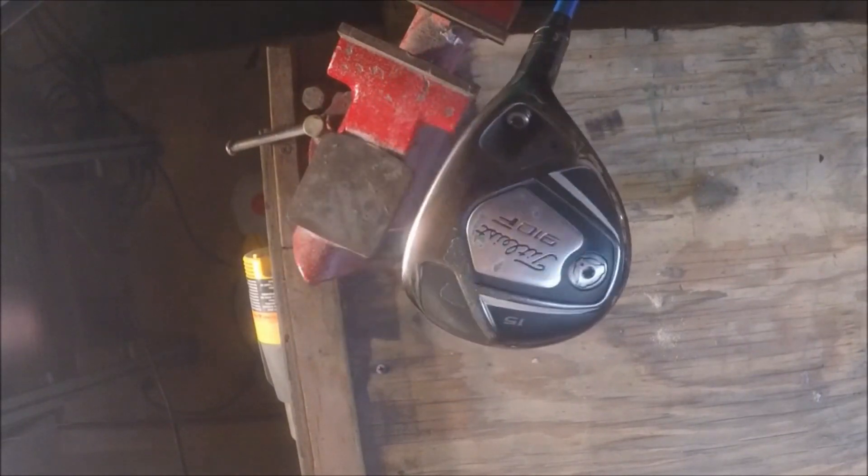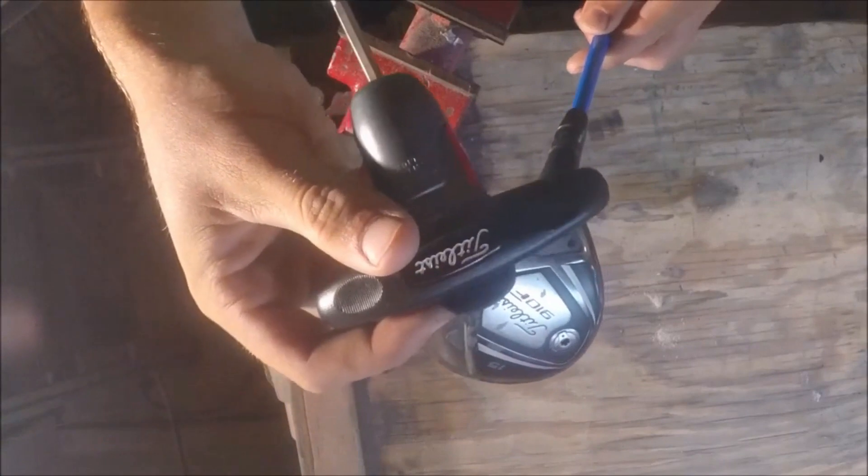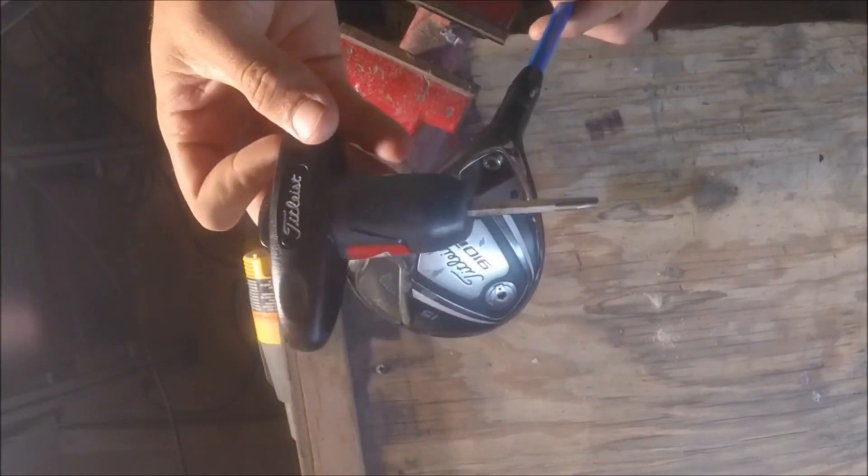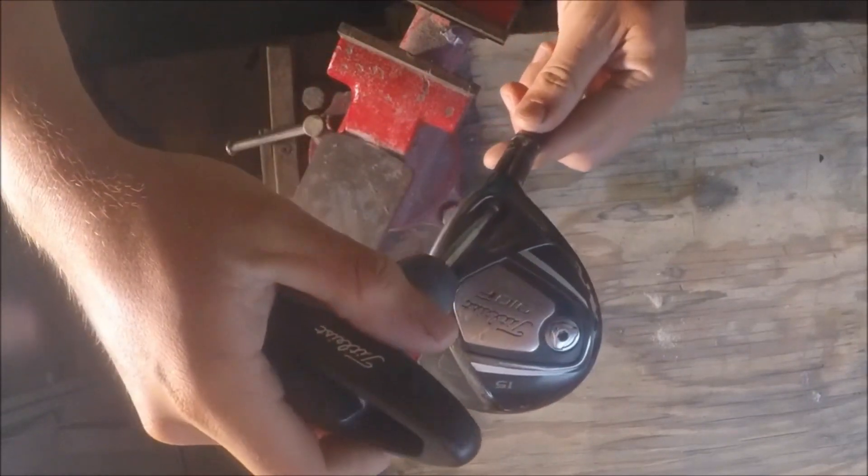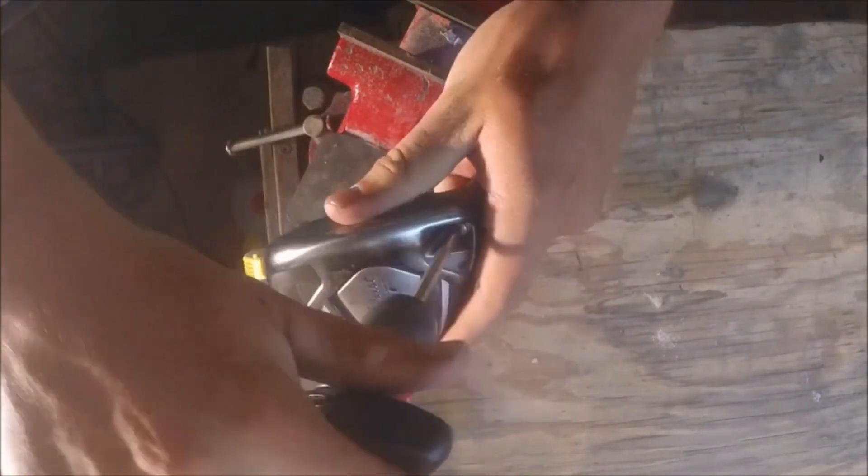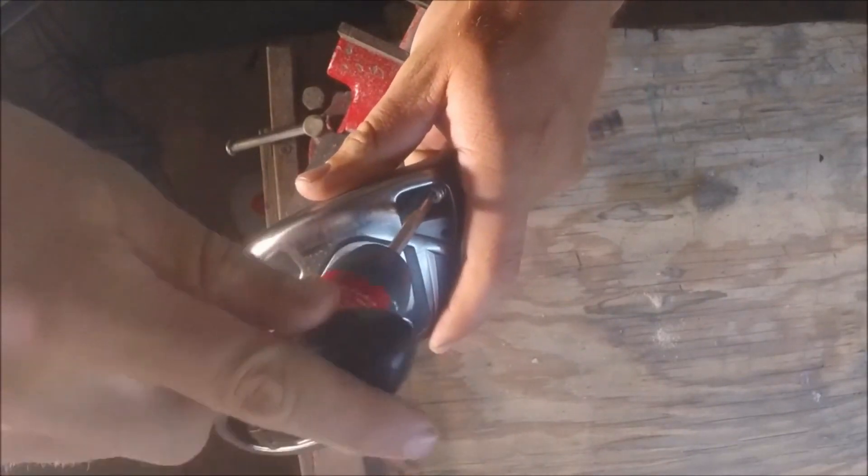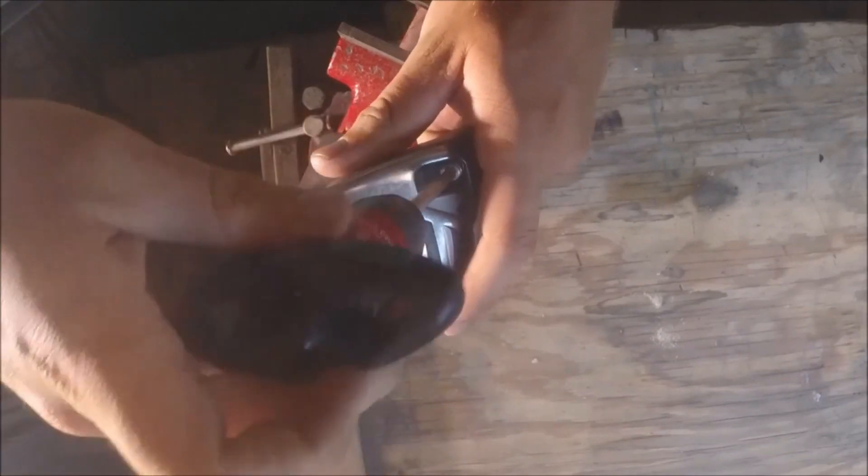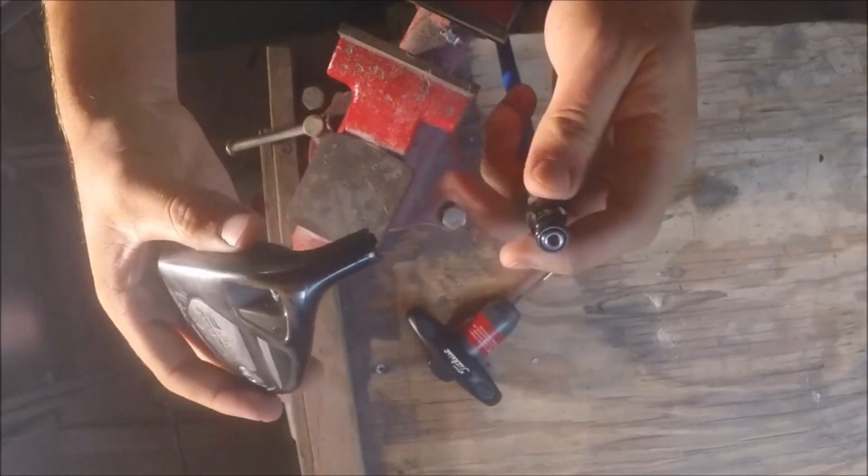The first step is to take the club head off. I've got this Titleist tool - a TaylorMade wrench will work the same. Just loosen that up and the club head comes right off.